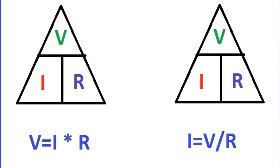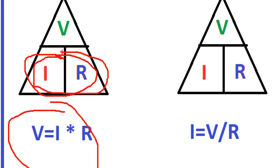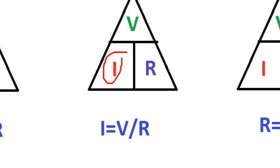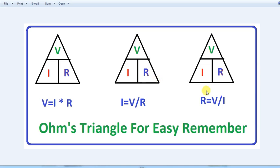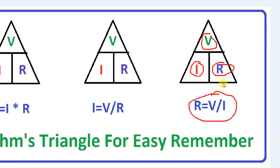In the Ohm's triangle, V equals IR. If we say it straight, this is multiplication — V is equal to I multiplied by R. If we have a current value in a circuit, current I equals V divided by R. And resistance R equals V divided by I. That's why we use the Ohm's triangle — it makes it easy to find any of the three values.